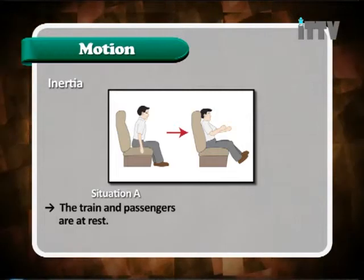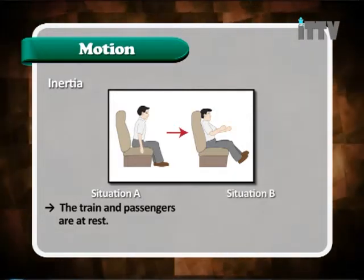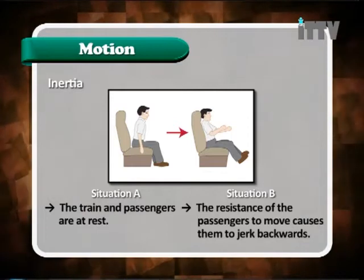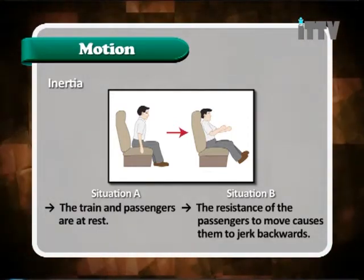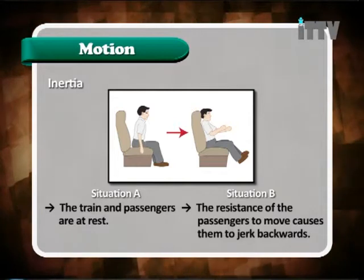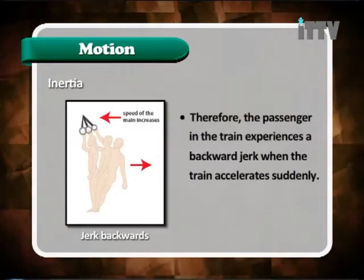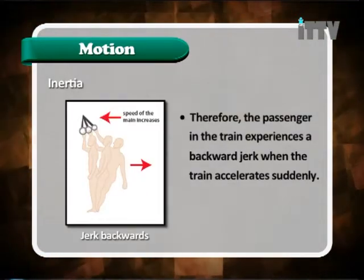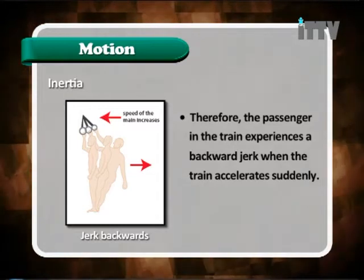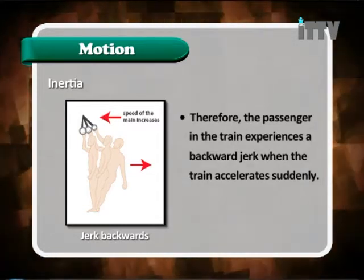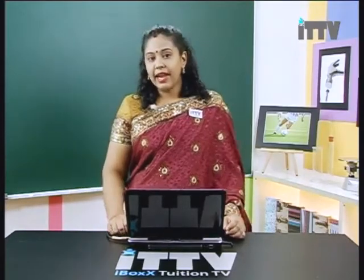In situation A, the train and the passenger are at rest. In situation B, the resistance of the passengers to move causes them to jerk backward. The passenger in the train experiences a backward jerk when the train accelerates suddenly. When the train actually accelerates, the person or the passenger will jerk backwards.